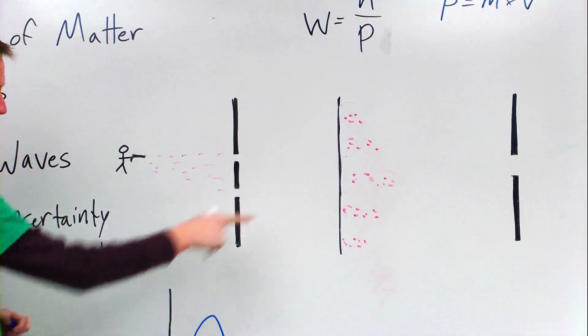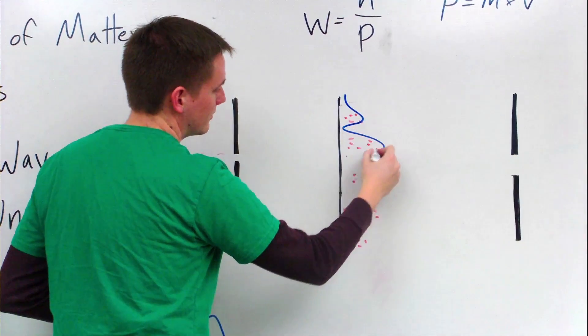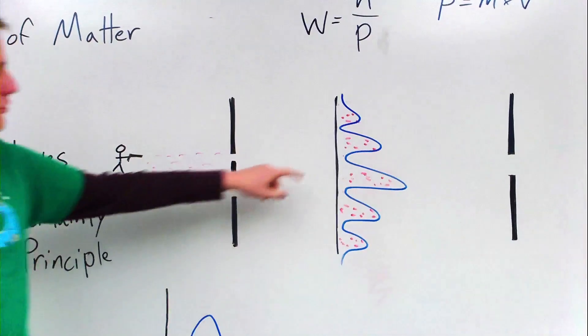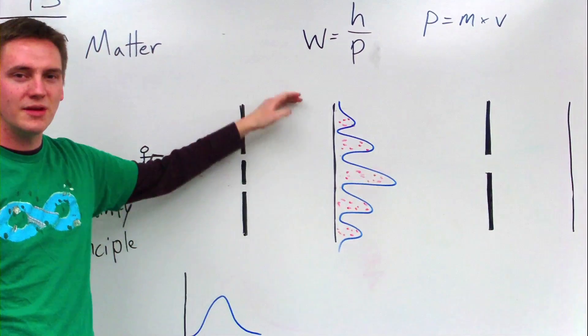So if we draw the probability curve of this interference pattern, it might look something like this. Where we're most likely to find it in this location, but then we have these other bumps.